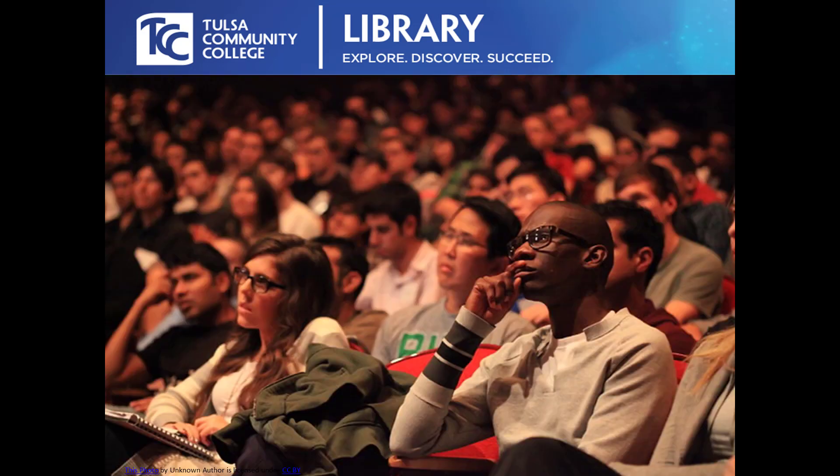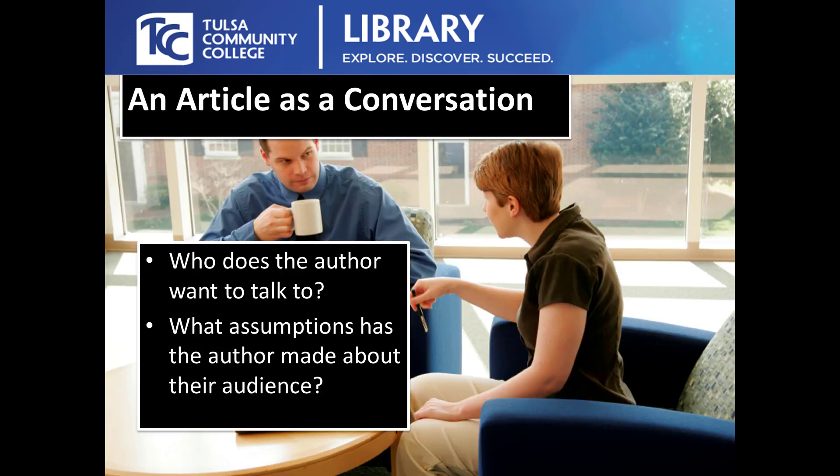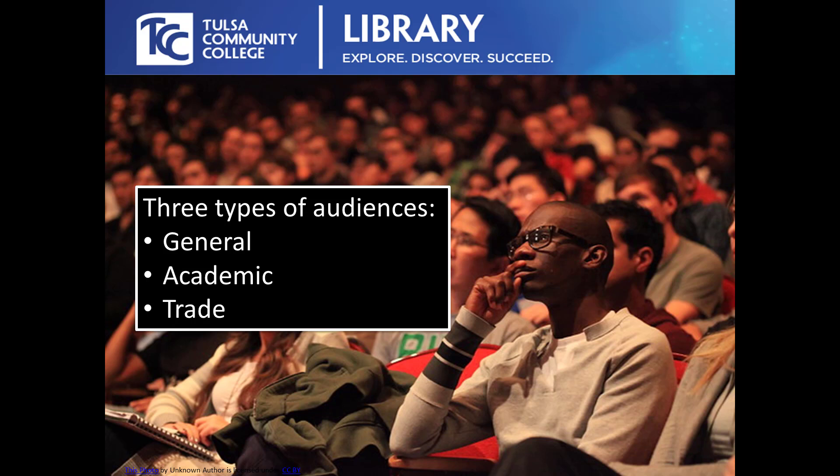Let's start with how to figure out what the intended audience of an article is. The way I look at it — a concept we'll return to often — is treating an article as one half of a conversation. So the question is, who is the author trying to have a conversation with? Who does the author want to talk to? And what assumptions has the author made about the people they are trying to reach? When it comes to audiences, there are three we will cover today: general, academic, and trade.